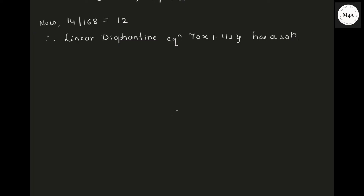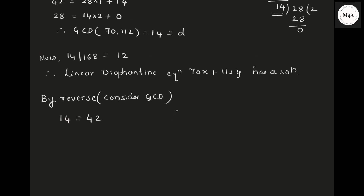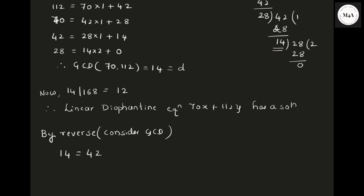They asked you to find the general solution. To find the general solution, we need to go in reverse from 14. By working back through the GCD: 14 can be written as 42 minus 28.